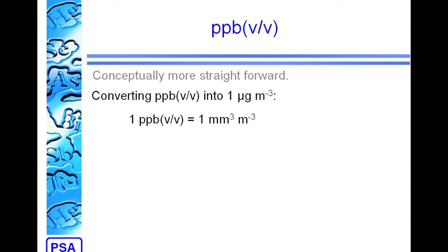Moving on to parts per billion on a volume basis, this is conceptually more straightforward. If we're converting PPB volume into micrograms per cubic meter, the first thing we need to do is express the PPB volume unit in some other units, so we can say 1 PPB volume is the same as 1 milliliter cubed per meter cubed.